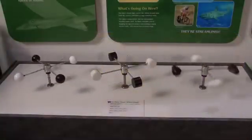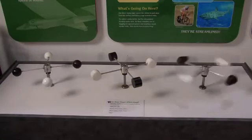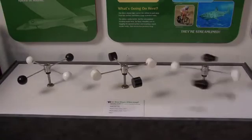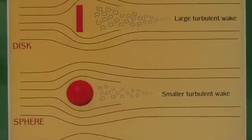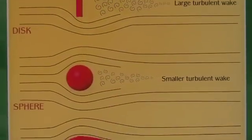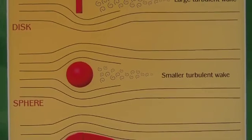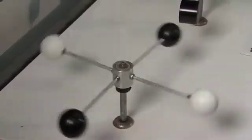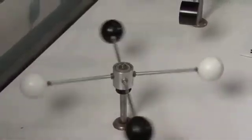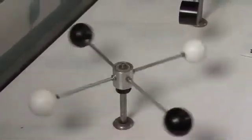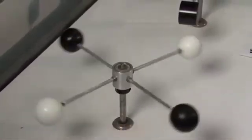The sphere is the next one to slow down to a stop. The sphere is slightly more aerodynamic in shape than our flat disc, so as air is moving across, it's going to stay attached to the shape longer.